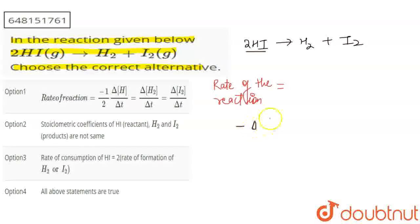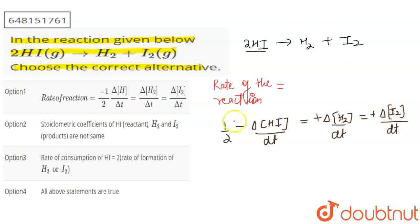Then for H₂, the rate of formation is d[H₂]/dt. Similarly for I₂, we have d[I₂]/dt. So the rate of the reaction equals -1/2 d[HI]/dt = d[H₂]/dt = d[I₂]/dt. This is the correct statement and this is true.